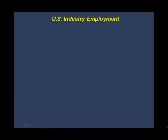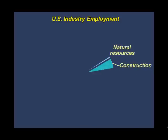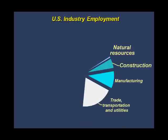Where do we work? There's a standardized classification system that defines and categorizes the various functions or industries in which people work. Natural resources and mining includes people who dig up oil and gas for energy or harvest minerals and trees. People who build homes, stores, offices, or lay roads and build power and water systems work in construction.